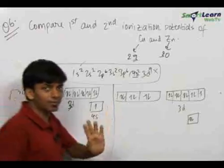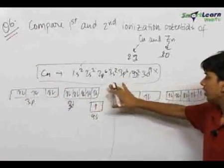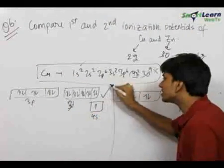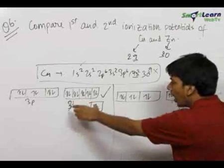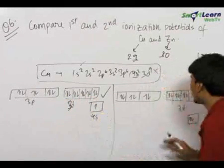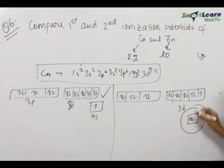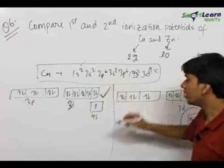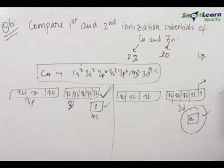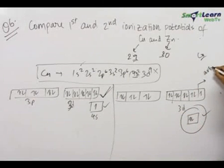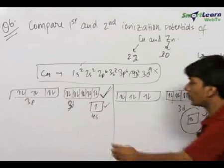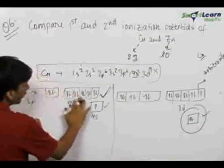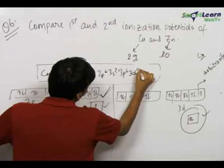This is a special case of copper — it happens only like this in copper, and also in the case of chromium. The important thing to realize is why this configuration is true. This is because a fully filled orbital and a half filled orbital is always better than only one fully filled orbital. In this case, we have one fully filled d orbital and one half filled s orbital, which is more stable. Therefore, we write the electronic configuration of copper as 3d10, 4s1.